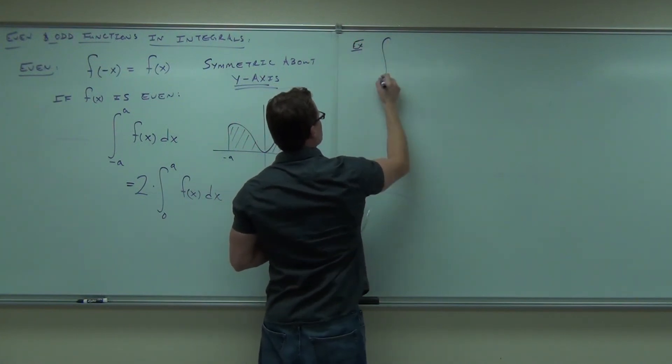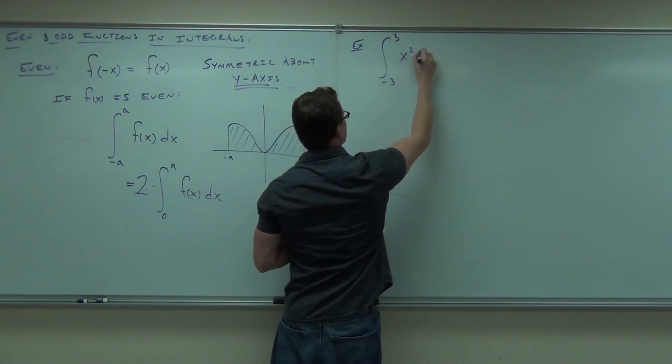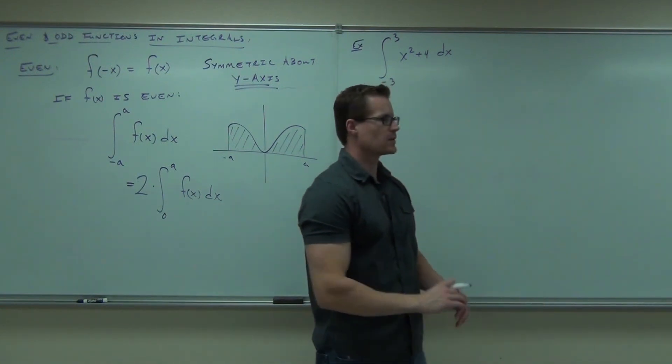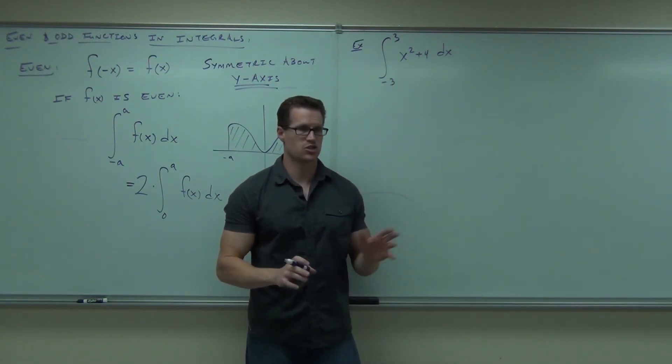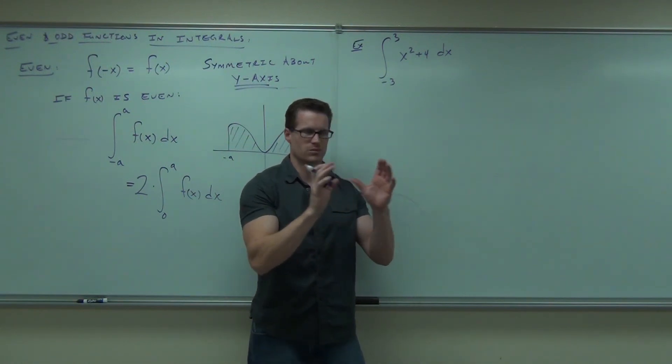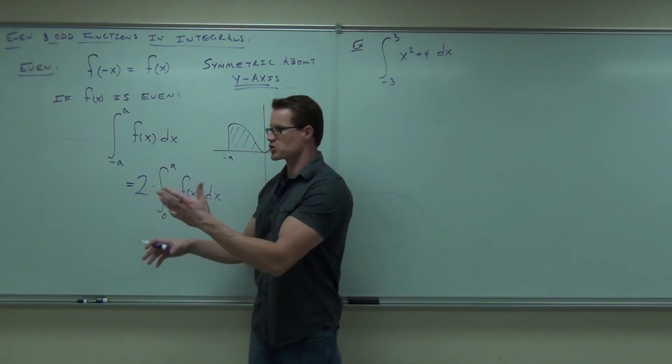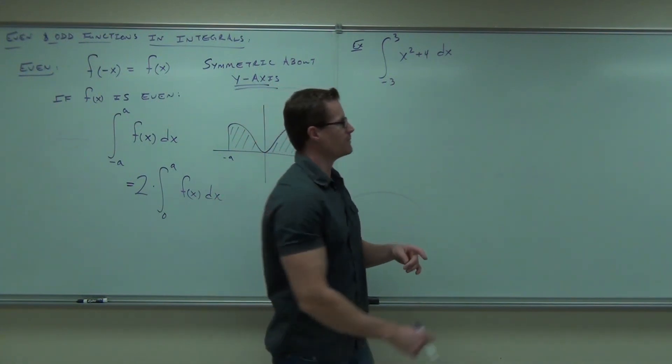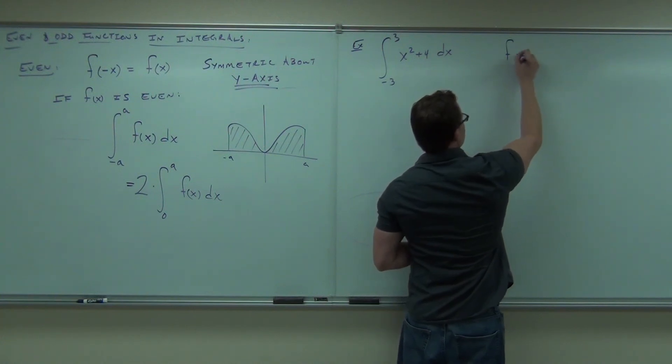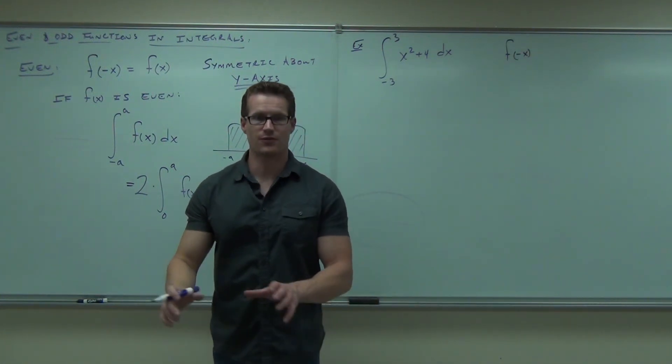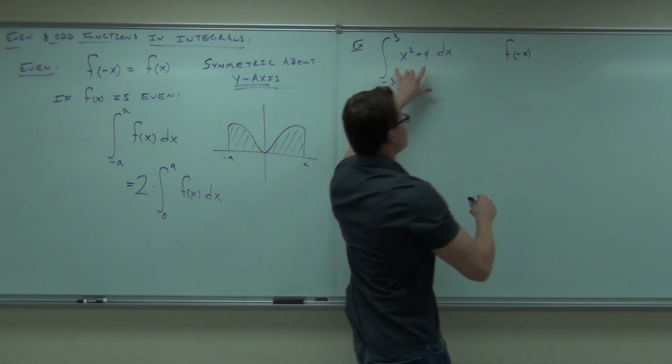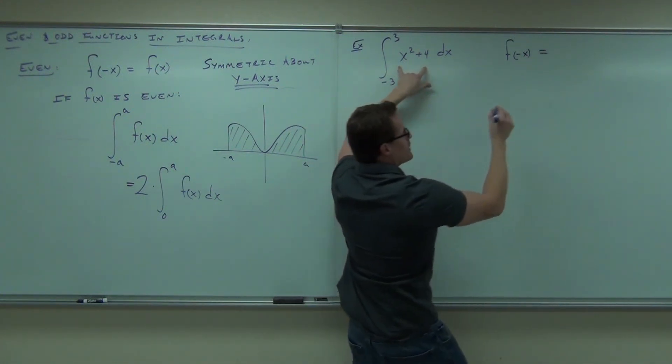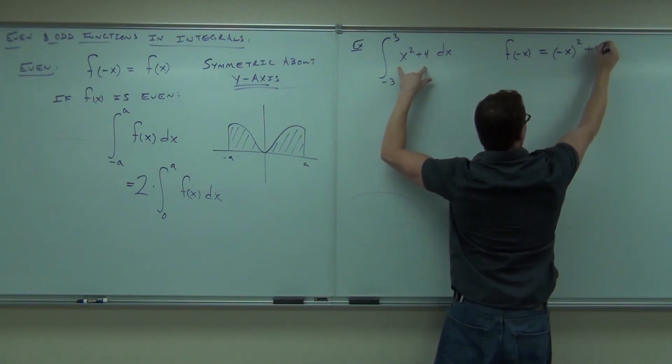For instance, that's a pretty basic integral. You could clearly do this integral just the way it is. I'm not going to give you a super tough one where it's super nice to do that. I'm just going to show you with one that's easy for us to see that it is possible. First thing you do though, you've got to prove it's even. Here's how you prove it's even. You start out with f(-x), and you have to show that that's equal to f(x). So for us, that would be (-x)² + 4.